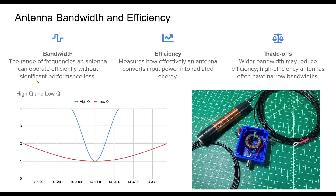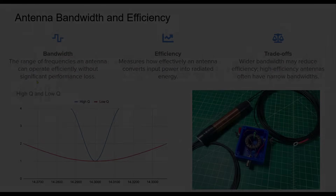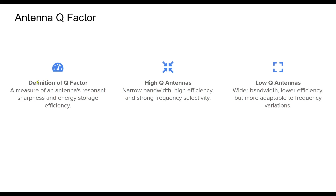Antenna bandwidth and efficiency are key performance metrics. Bandwidth refers to the range of frequencies over which an antenna operates effectively without excessive signal degradation. Efficiency measures how much input power is converted into radiated energy rather than lost as heat or reflections. There are often trade-offs between these factors — broadband antennas tend to have lower efficiency, while highly efficient antennas typically operate within a narrow frequency range. The Q factor, or quality factor, describes how well an antenna stores and radiates energy at its resonant frequency. A high Q antenna has a very sharp resonance, operating over a narrow frequency range, ideal for high selectivity. Low Q antennas have a broader frequency range but tend to be less efficient.